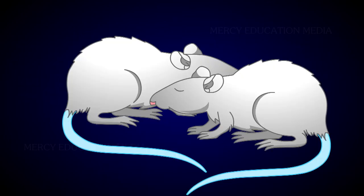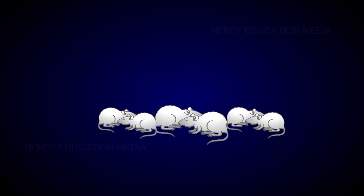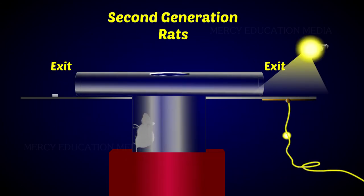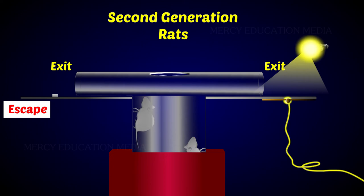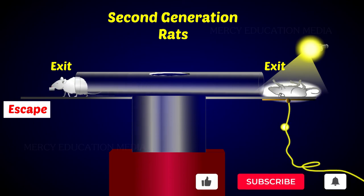Subsequently, the rats were allowed to breed and the next generation developed. The same experiment was repeated in the second generation. According to McDougall, it was claimed that the number of mistakes committed gradually got reduced. The speed of learning increased from generation to generation.